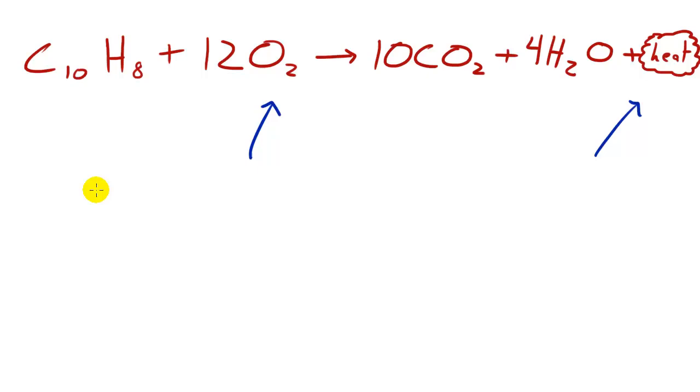So that would make this a combustion reaction. Now if we balance this baby, we can see that there are three types of elements on the left hand side: carbon, hydrogen, and oxygen. You have 10 carbon, 8 hydrogen, and 24, whoa a whole lot of oxygen there. So now let's do the same on the right hand side and make sure we didn't mess up.